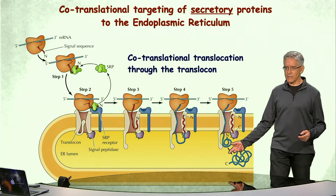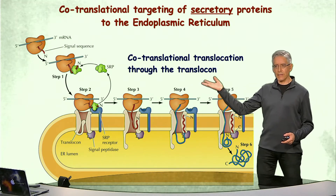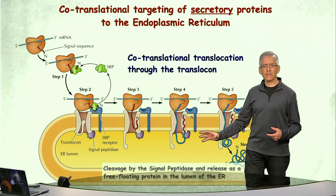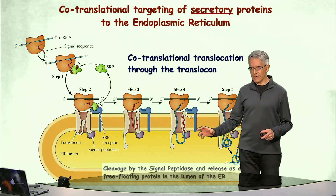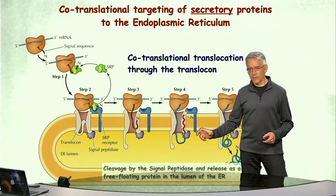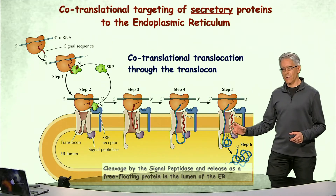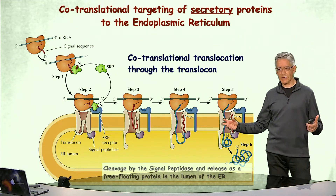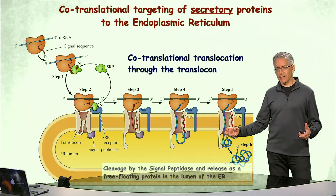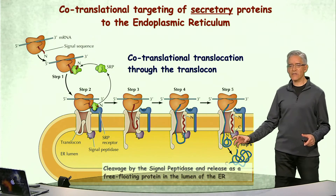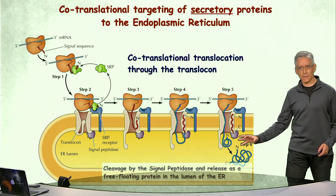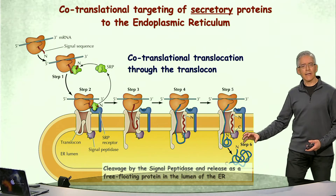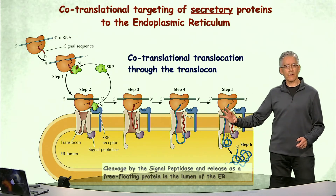An event that typically happens as proteins continue to be translocated through the translocon is the elimination of the signal sequence that allowed proteins to be targeted to the translocon in the first place. This is performed by a protein known as signal peptidase, which cleaves off the signal peptide. When that takes place, the protein is released as a soluble protein in the lumen — the interior space — of the endoplasmic reticulum, and can then continue along the secretory pathway to its final destination.